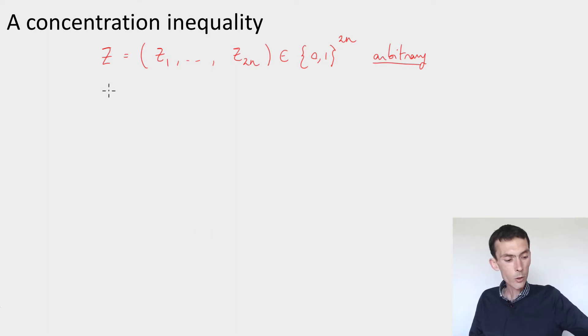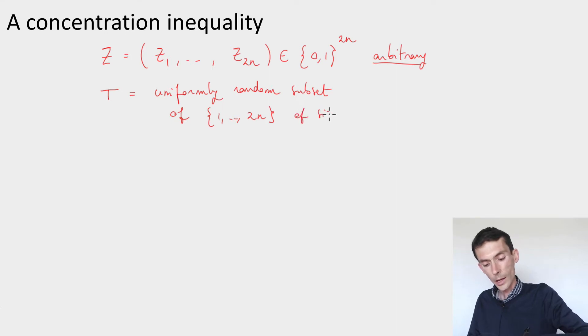Now there's a second random variable, call it t. And this one, I'll assume that t is simply chosen as a uniformly random subset of the integers 1 through 2n of size n. And now here's what the inequality says.